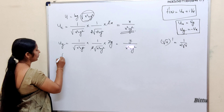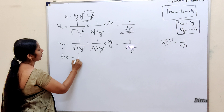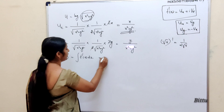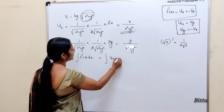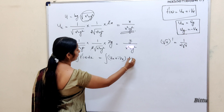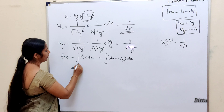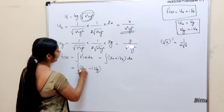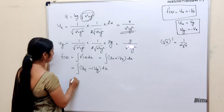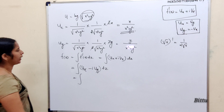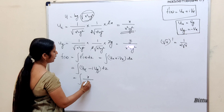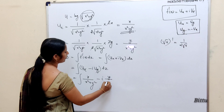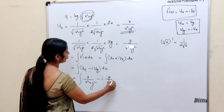Next, find f(z). We know f(z) = integral of f'(z) dz. So f(z) = integral of (u_x + i·v_x) dz. Here v_x = −u_y. So f(z) = integral of (u_x − i·u_y) dz = integral of (x/(x²+y²) − i·y/(x²+y²)) dz.